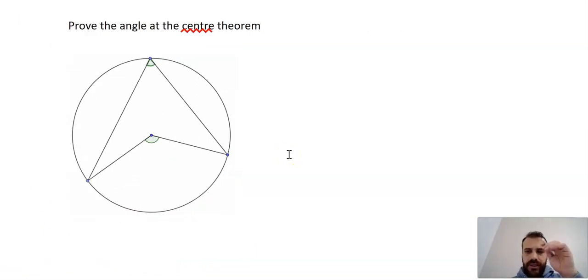Prove the angle at the center theorem. We're going to use a lot of the same techniques that we used for the last one. I'll start by constructing a line here. That means we have a radius, a radius, and a radius, which means we have a bunch of isosceles triangles.